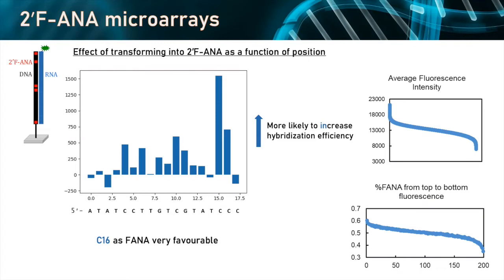We tried to use the entire data from all 262,000 hybridization events and do feature selection to understand whether there are positions that seem sensitive to the introduction of FANA. Indeed, we see that position 16 — this particular C — is telling us that if it is transformed into FANA it will cause a huge increase in fluorescence intensity, meaning it's very positive for hybridization behavior. But interestingly, the nucleotide directly 5' to it, this T, has almost no influence on hybridization efficiency when you introduce FANA there. So there's also a strong position dependence — it's not simply 1 or 2 degrees per base pair.